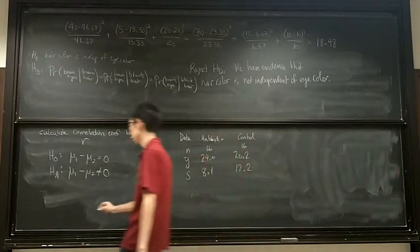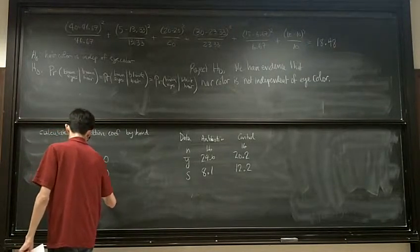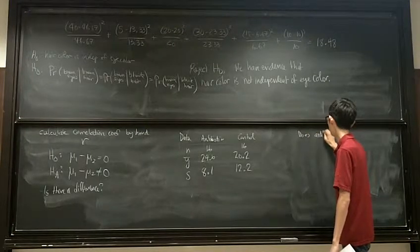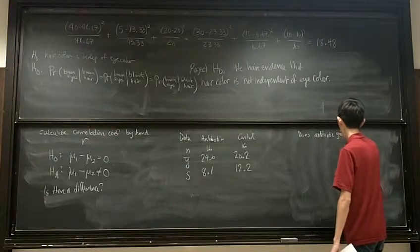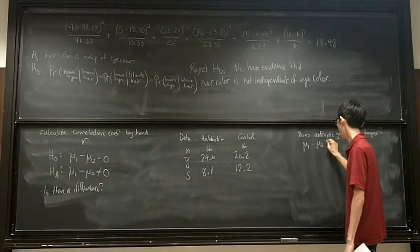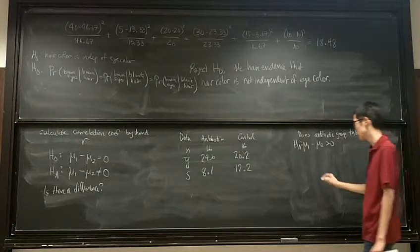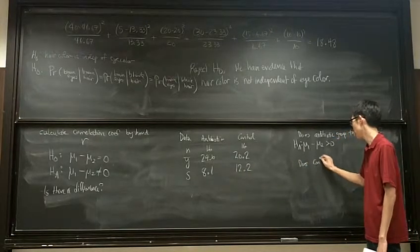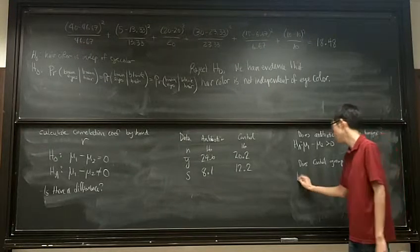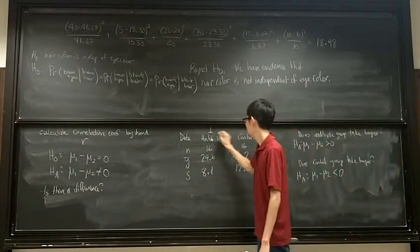The key word was, is there a difference? If it said, does antibiotic group take longer, then it would be mu1 minus mu2 is greater than zero. So if we have a directional one, it would be mu1 minus mu2 is greater than zero. Null hypothesis would be the same. Null hypothesis is the same whether it's directional or not directional. And then if the other one said, does control group take longer? So in that case, it could be mu1 minus mu2 less than zero. Assuming this is group one and that's group one.